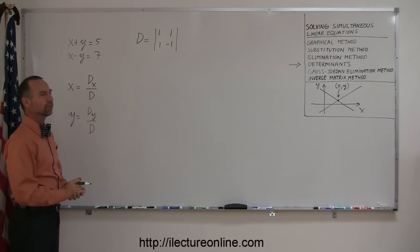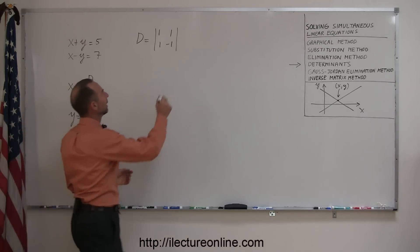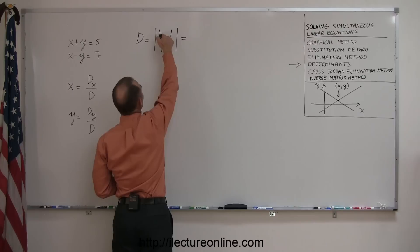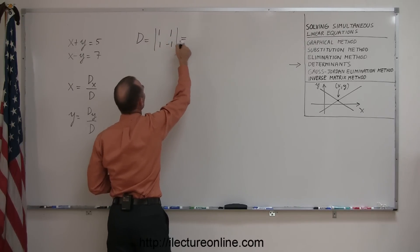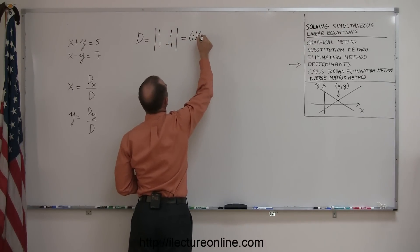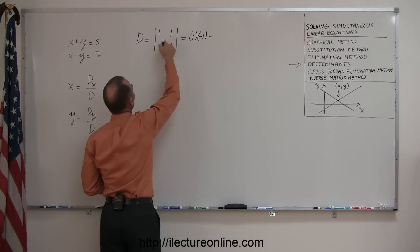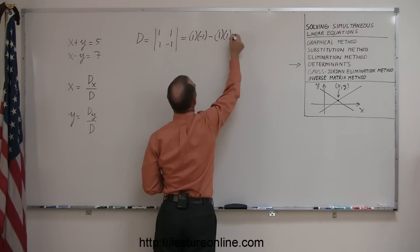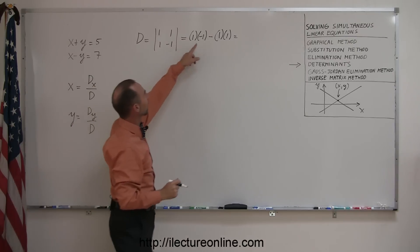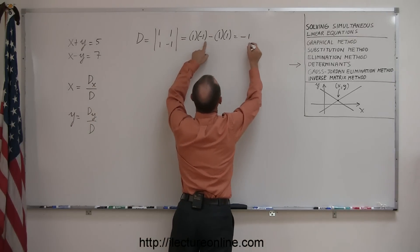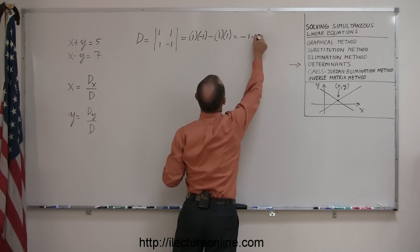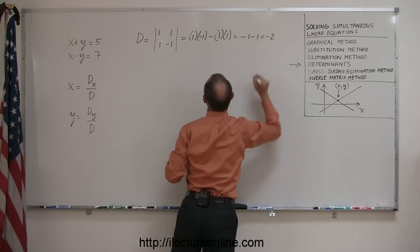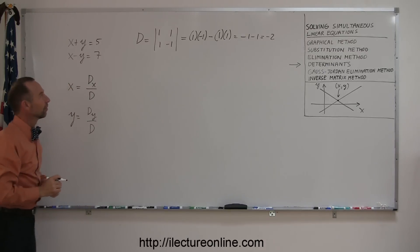How do you calculate the determinant? You multiply the diagonal numbers, so 1 times negative 1, and subtract from that the product of the other two numbers in the other diagonal, 1 times 1. So this becomes 1 times negative 1 is negative 1, minus 1 times 1, which is minus 1, or negative 2. The determinant of this set of equations is negative 2.